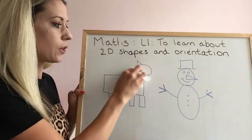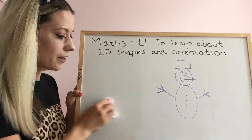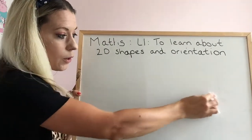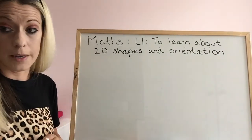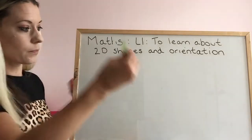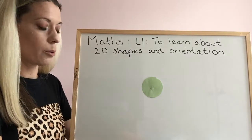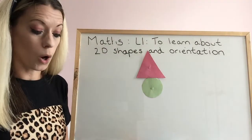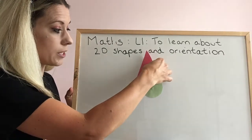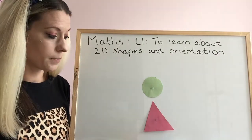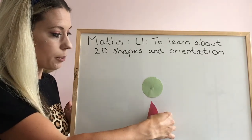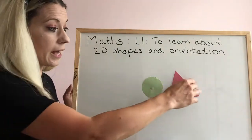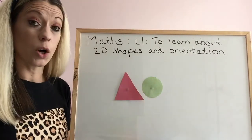But first of all we need to focus on our star words. We're going to be looking at the words: top, middle, bottom, left and right. I'm going to put a circle in the middle of my board. If I put my triangle there, I put it on top of my circle. If I put it down here, I put it at the bottom of my circle. If I put it over here, I put it on the right of my circle. And if I put it on the left of my circle.